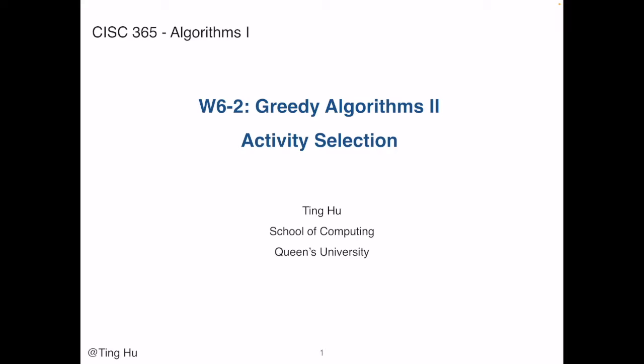In this lecture, we will show another optimization problem where a greedy algorithm produces an optimal solution. This example is the problem of scheduling several competing activities that require exclusive use of a common resource, with a goal of selecting a maximum size set of mutually compatible activities.